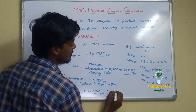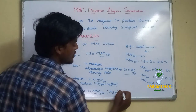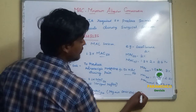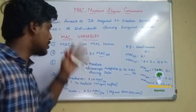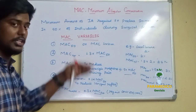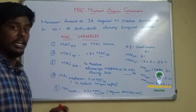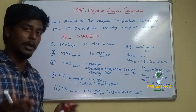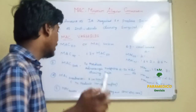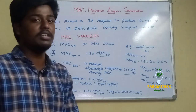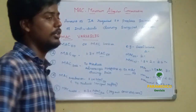To gain consciousness, we use MAC awake. So the MAC variables are: MAC 50 is the basic definition; MAC 95 covers 95% of individuals; MAC BAR reduces the adrenergic response during pain; MAC intubation reduces hemodynamic changes during intubation; and MAC awake is where the patient regains consciousness.